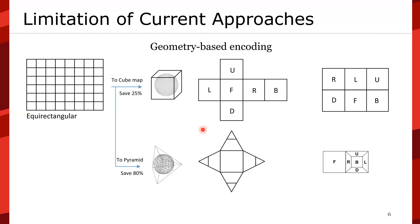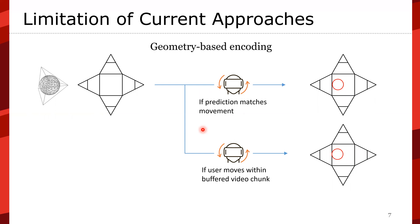For geometry-based encoding, the content is first converted to a cube map format. This cube map encoding saves 25% of the content size and produces a rectangular format suitable for streaming. We can further convert it to the pyramid format, which saves 80% of the content size. However, the limitation is the same: when prediction matches, users enjoy higher quality; but if users move within the preferred video chunk, they experience poor quality. Since we have to use a streaming service, this is inevitable — perfect prediction is not possible.